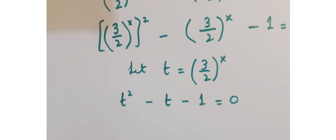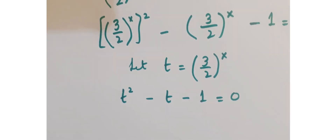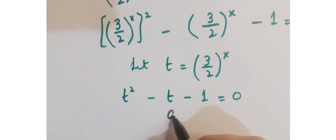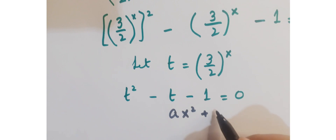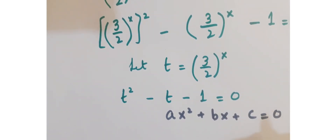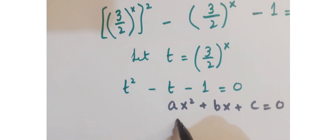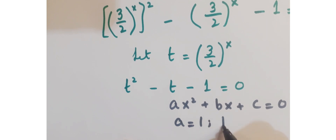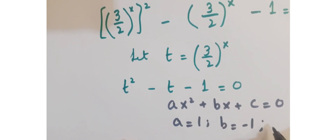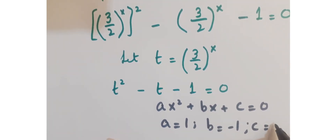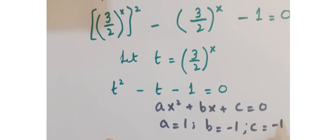Now this is a quadratic equation. Comparing this with the standard quadratic equation, that is ax squared plus bx plus c equals 0. So we have a is 1, b is minus 1, and c is minus 1.